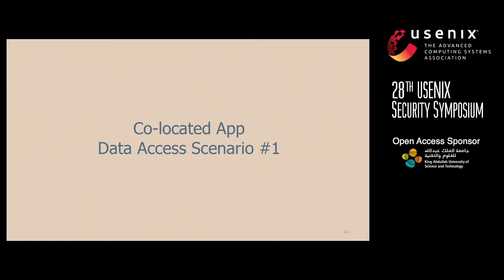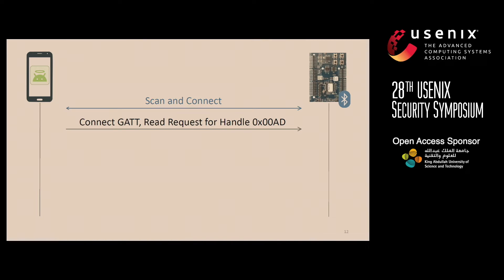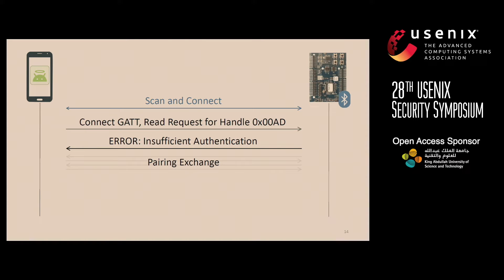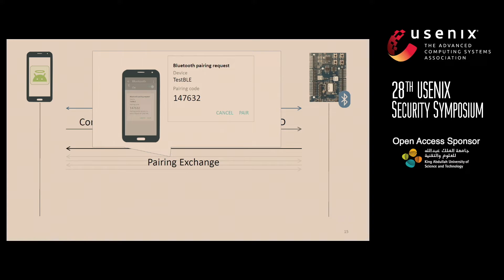The two applications have essentially the same functionality. In the first unauthorized data access scenario, we launch our good application, and it scans for and connects to our BLE device and issues a request for accessing the protected characteristic. Because the two devices don't have a trust relationship at this point, this will result in an insufficient authentication error. As soon as the Android operating system sees this error, it will initiate the pairing process. At this point, it may be the first time the user becomes aware that this application is trying to access data from their BLE device.